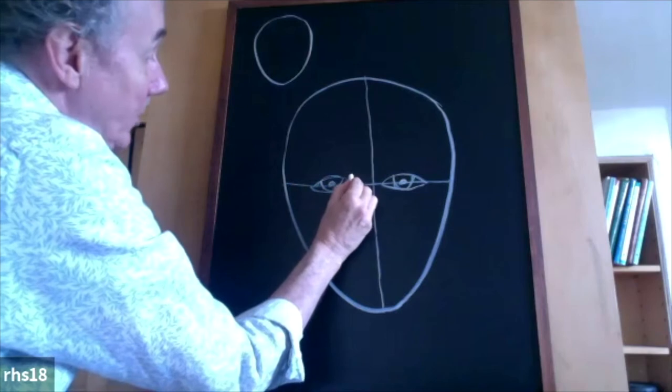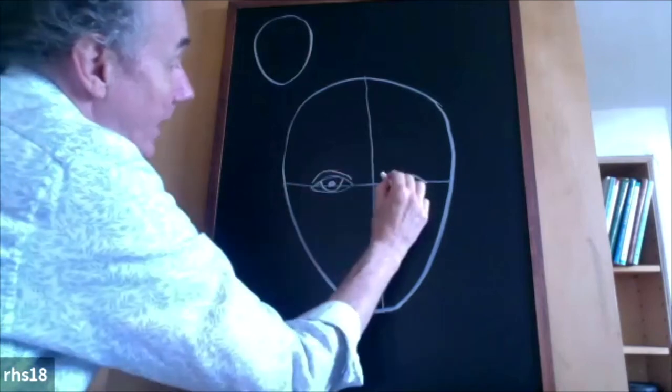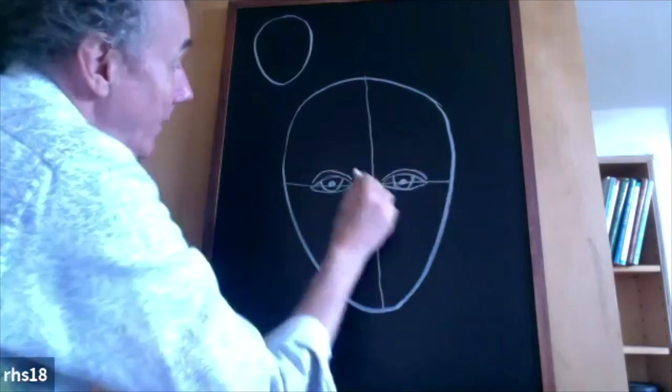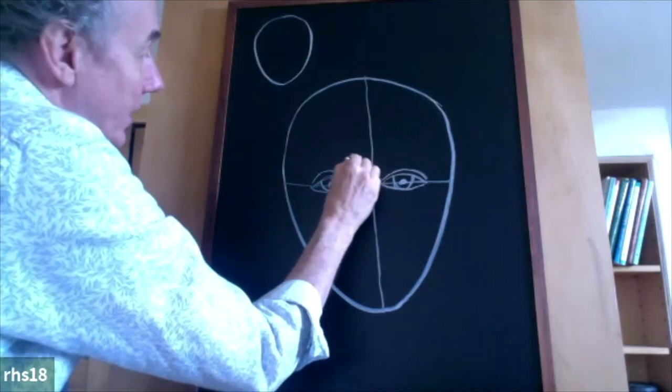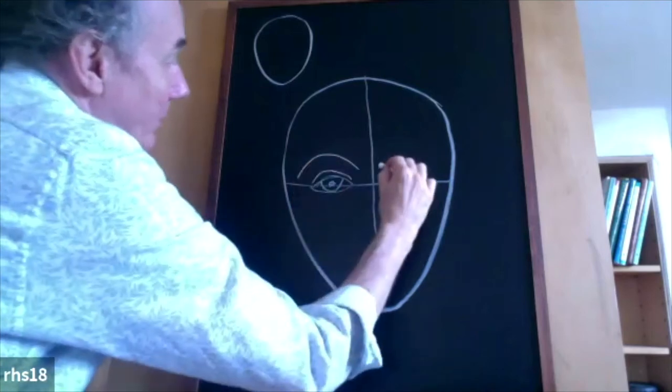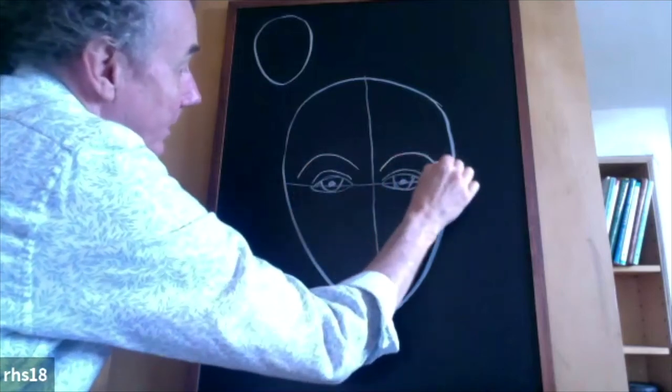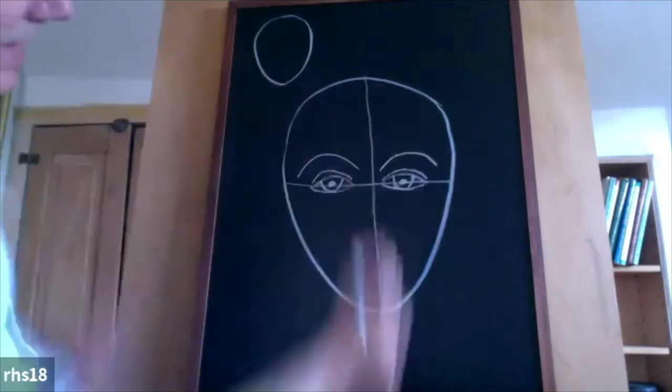So now above my eye, I'm going to do just an indication of an eyelid here, and then I'm going to draw in my nice eyebrow arching up above that. So everything's sort of like all lined up.